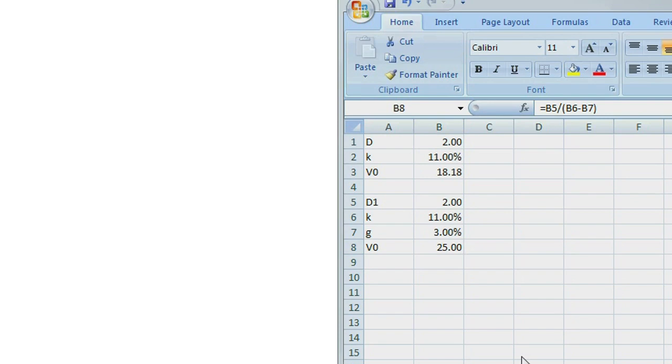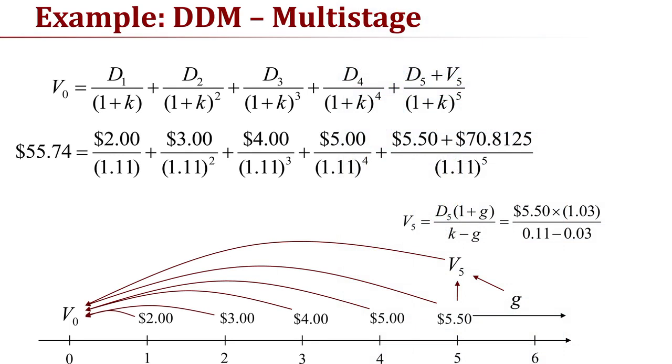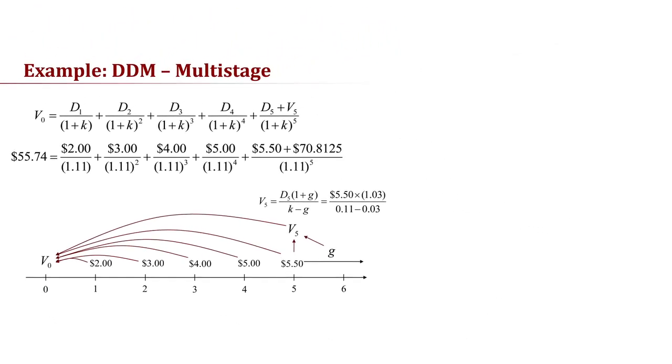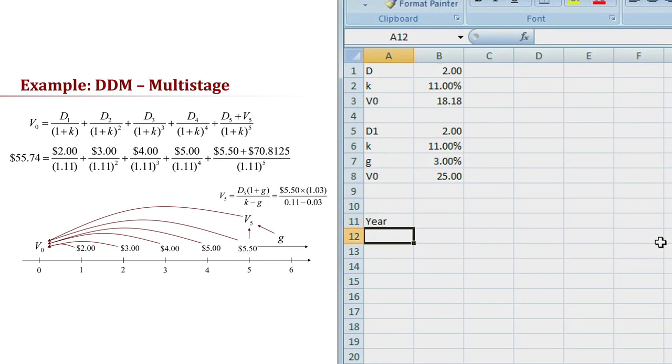So again, we'll modify the Excel spreadsheet that we had, this time for the multi-stage dividend discount model. This is where a spreadsheet really comes in handy as you try to model this. I'm going to label the cell slightly different, and you'll see why in just a second. So we'll start out by putting the dividend for each year. So I'm going to put a year heading here. I'll put 1, 2, 3, 4, and 5 to represent the columns for my dividends.